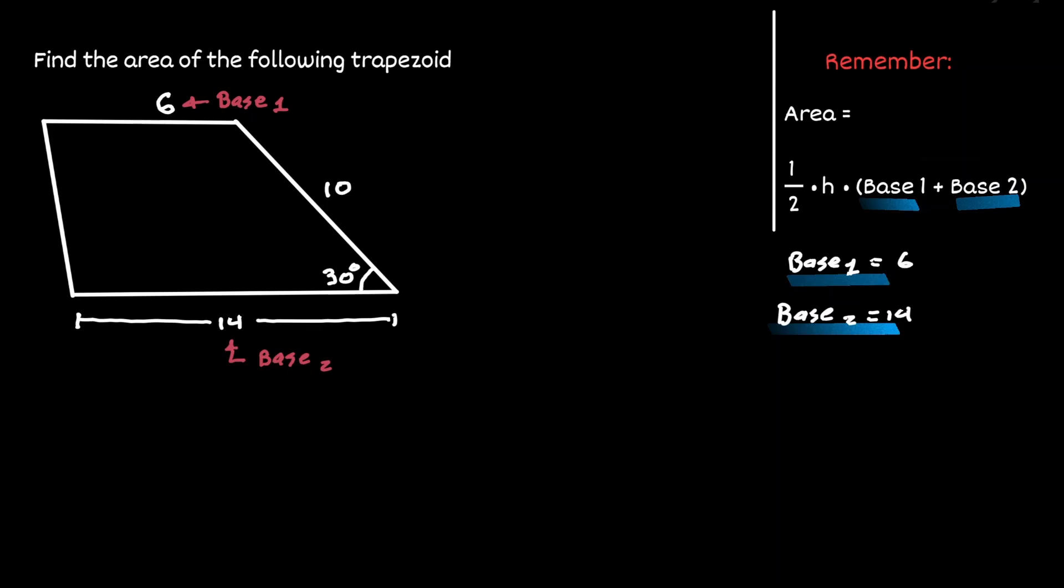The only thing that is needed now is the value of the height. For that let's choose one vertex in our trapezoid and draw a vertical line to it. The length of this vertical line is what we can refer to as the height of the trapezoid. But notice that we have created a right triangle, so let's analyze that triangle individually.